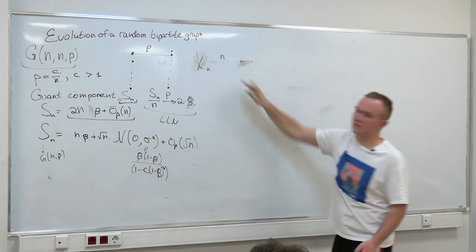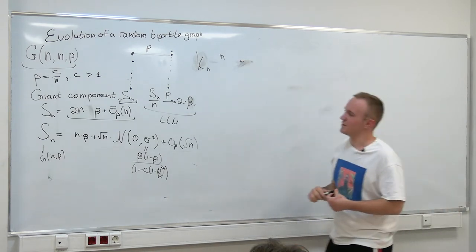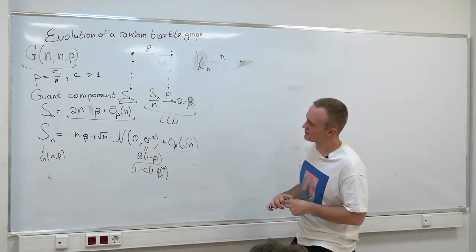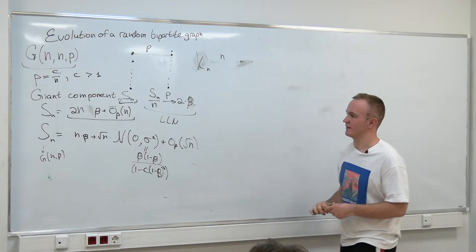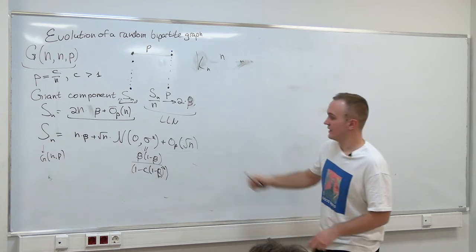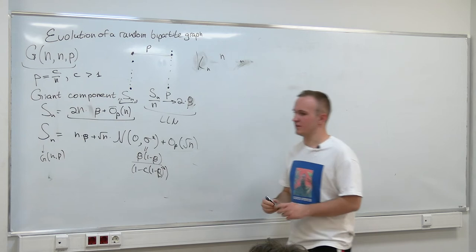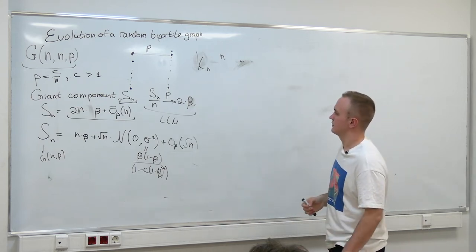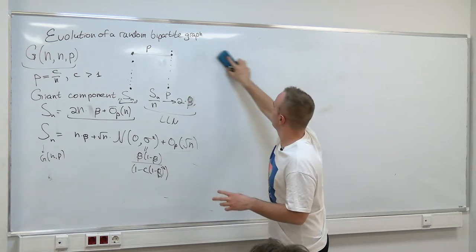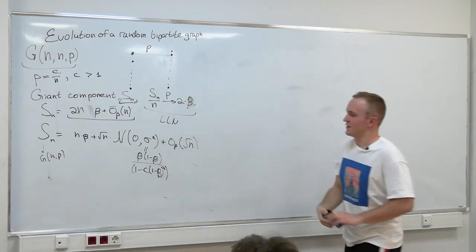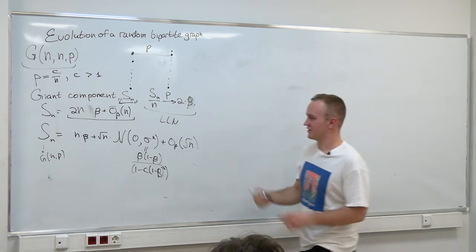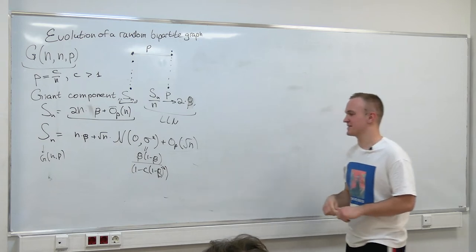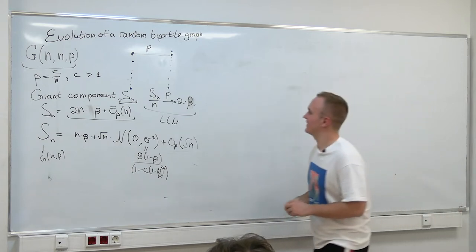So all these theorems can be generalized from the complete graph to an expander. Not quite easily, but there are such results. And of course for the bipartite graph, it's not an expander — but it's a bipartite expander or something. Maybe there is a more general result of my proof for bipartite expanders, but I'm not quite sure.